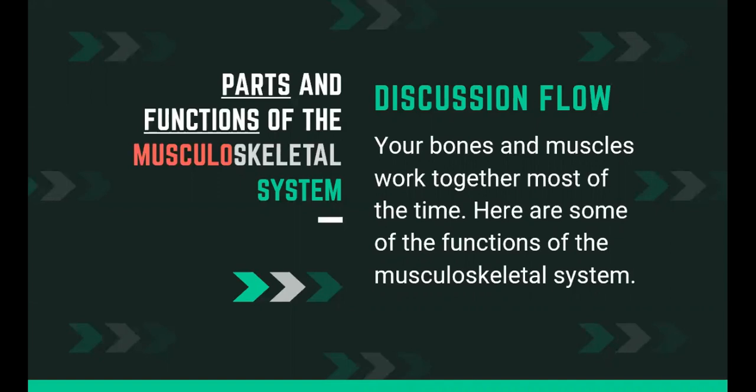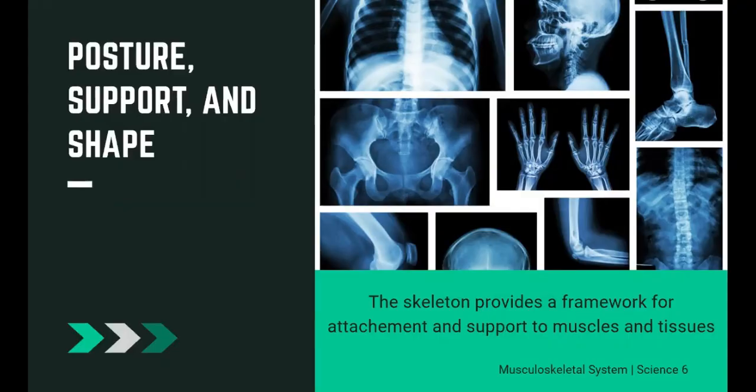Now, the parts and functions of the musculoskeletal system. Your bones and muscles work together most of the time. Let's start with posture and support. The skeleton provides a framework for attachment and support to muscles and tissues. Without your bones, your body cannot stand upright. Together, muscles and bones shape your body, and your posture is brought about by the proper alignment of the bones and muscles.